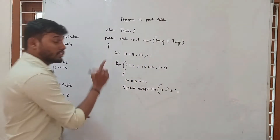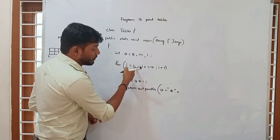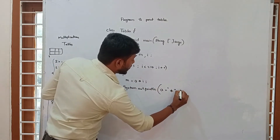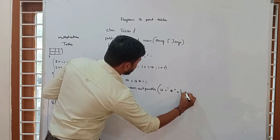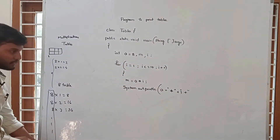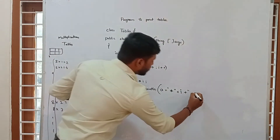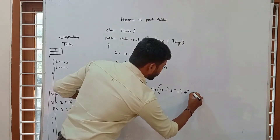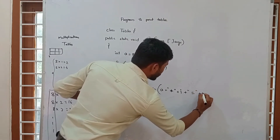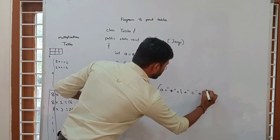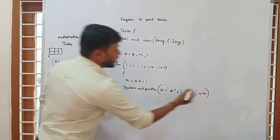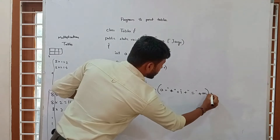So the print format is: a, then star (*), then i, then equals (=), then m. The variable i and m will be changing from 1 to 10. Here I am giving i for the multiplier column, and m for the result column. We need to declare m as 0 initially.